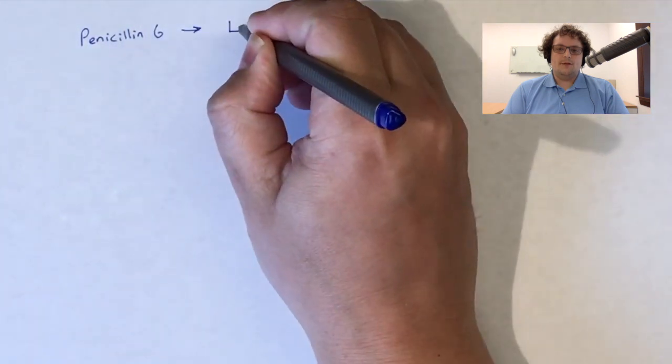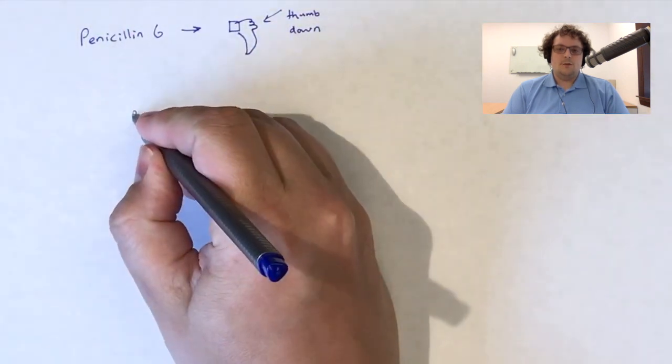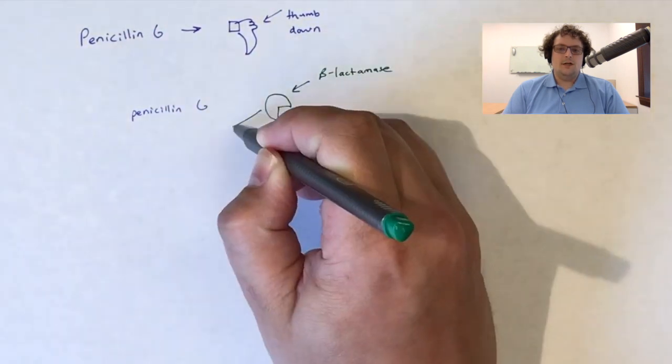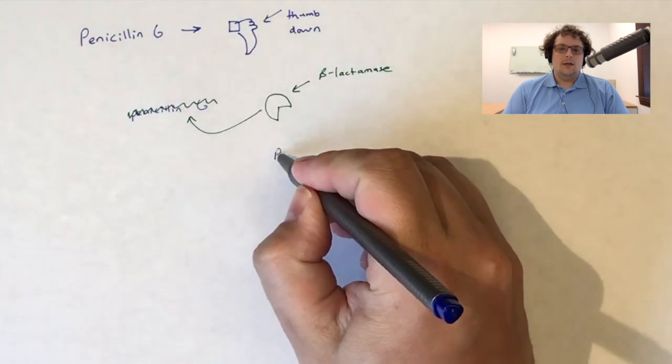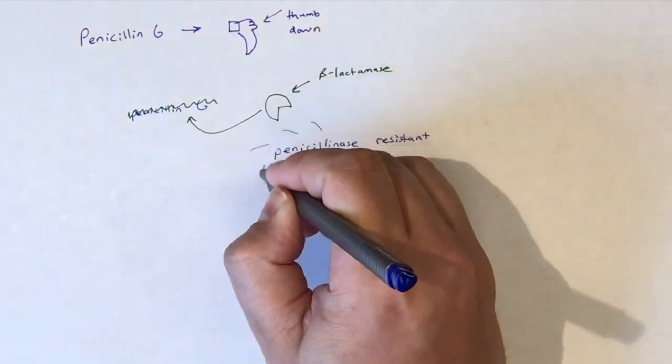To improve upon the drawbacks of using penicillin G in bacteria that produce beta-lactamase or penicillinase, there is a need to modify penicillin G to decrease its susceptibility to beta-lactamase. Enter the penicillinase-resistant penicillins.